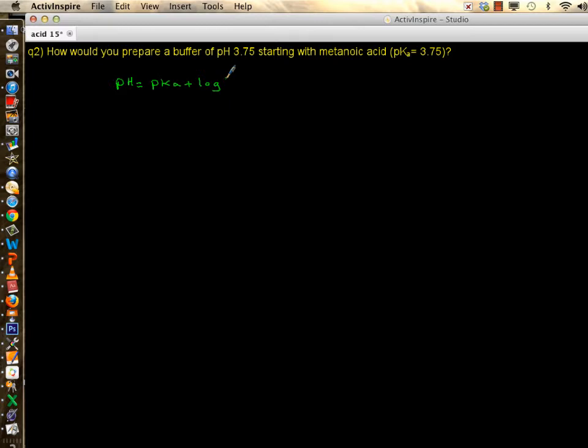So when is the case that pH is equal to pKa? It's when log is log of one, when your numerator concentration of the salt is equal to the denominator. So 3.75 equals 3.75 plus log. This has to become log of one, so concentration of the salt should equal concentration of the acid.